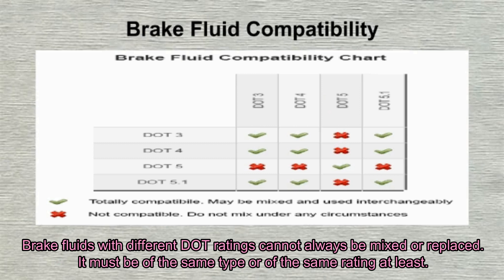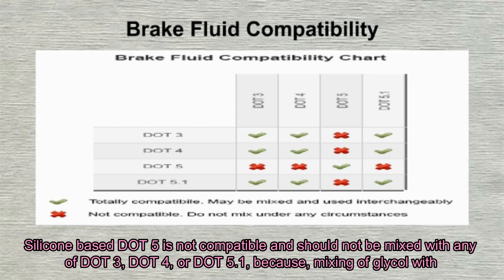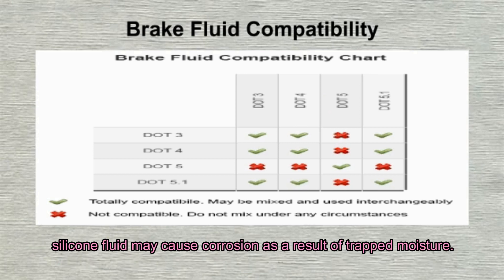Brake fluids with different DOT ratings cannot always be mixed or replaced — they must be of the same type or rating at least. For example, DOT3 can be replaced with DOT4 or DOT5.1, and DOT4 can be replaced with DOT5.1. Silicone-based DOT5 is not compatible and should not be mixed with any of DOT3, DOT4, or DOT5.1, because mixing glycol with silicone fluid may cause corrosion as a result of trapped moisture.